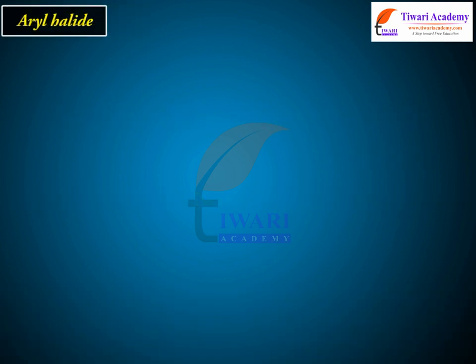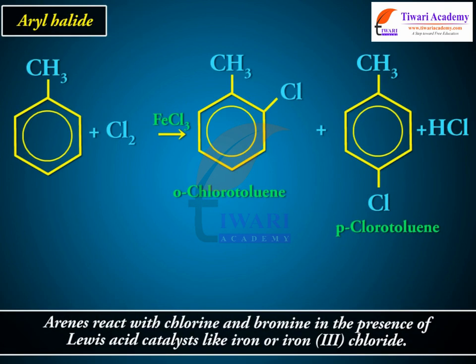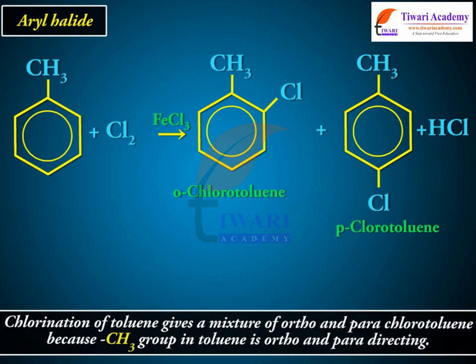Aryl halides: arenes react with chlorine and bromine in the presence of Lewis acid catalysts like iron or iron(III) chloride. Chlorination of toluene gives a mixture of ortho and para-chlorotoluene because the CH3 group in toluene is ortho and para-directing.